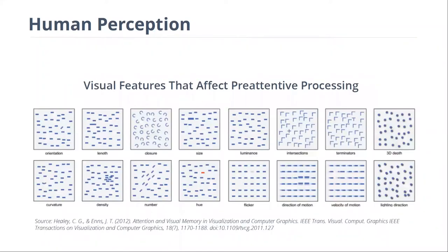There are more features outside of size or color that affect the pre-attentive process. Changing the way something is positioned, different orientations, the way things are clustered together or spread further apart will also direct your attention and understanding in different ways. If we bring in animation and lighting, we have even more features available.